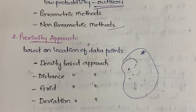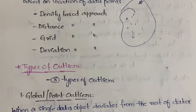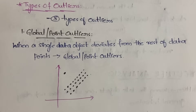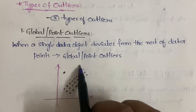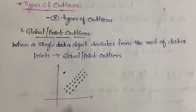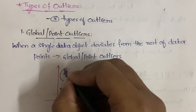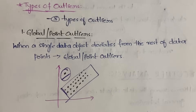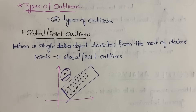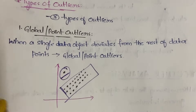Now, the types of outliers — there are three types. First is the global or point outlier. Global means when a single data object deviates from the rest of the data points, such outliers are called global or point outliers. If only a single data point is not obeying the general behavior — not a group of data points, just one — it falls under the global or point outlier category.